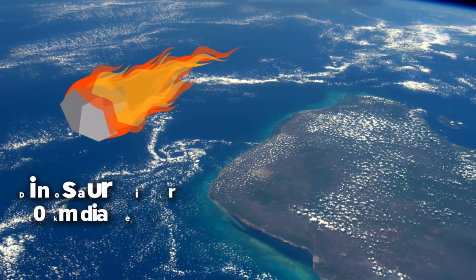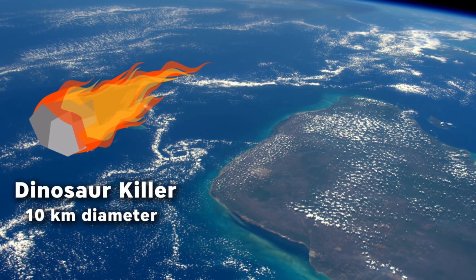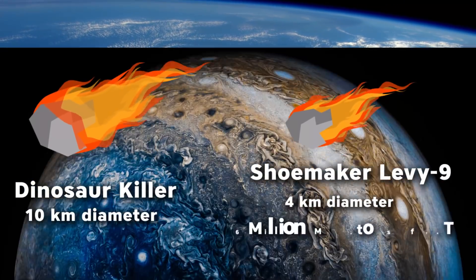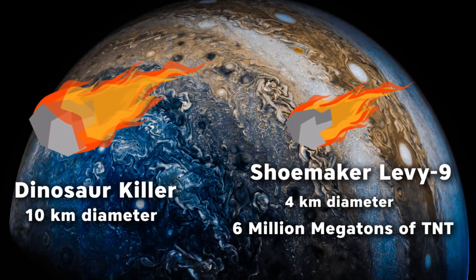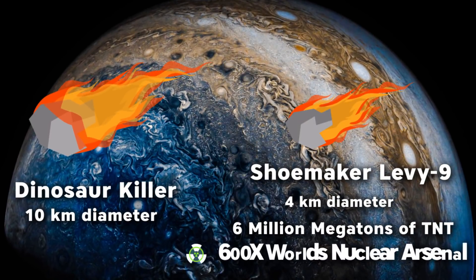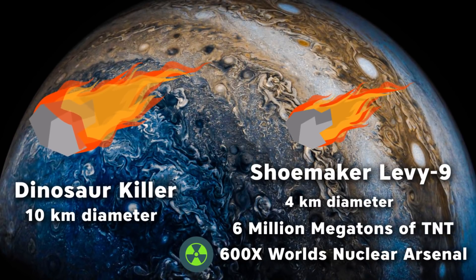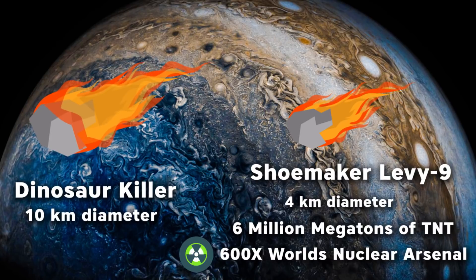The asteroid that hit Chicxulub 65 million years ago, ending the age of dinosaurs, was about 10 kilometers in diameter. Shoemaker-Levy 9 was 4 kilometers in diameter. When it hit Jupiter, it released energy equivalent to 6 million megatons of TNT. That's 600 times all the world's nuclear arsenal.